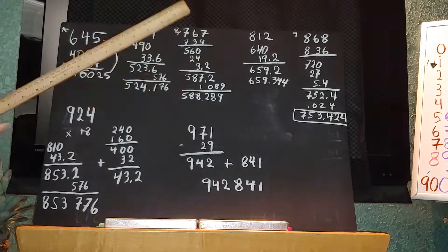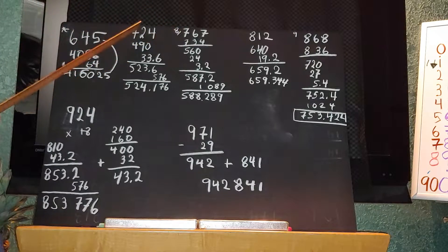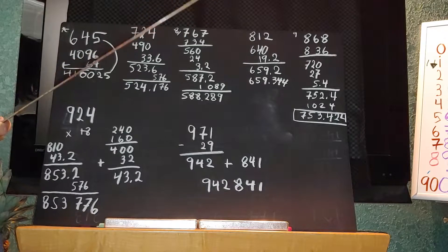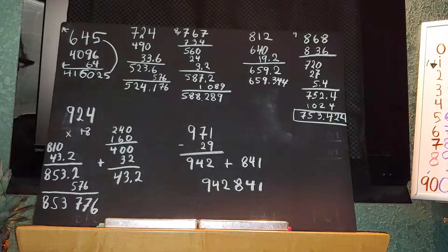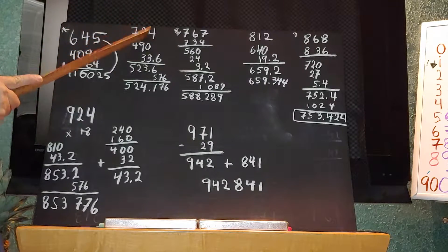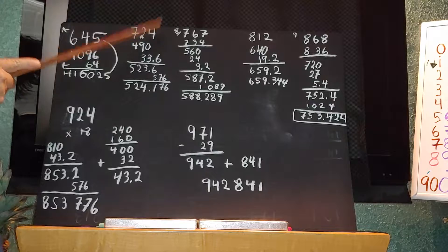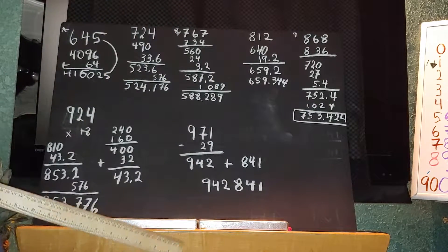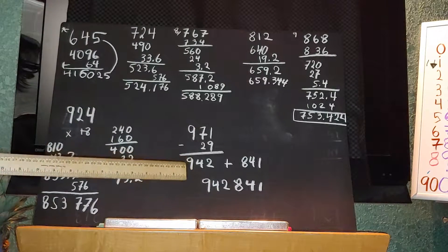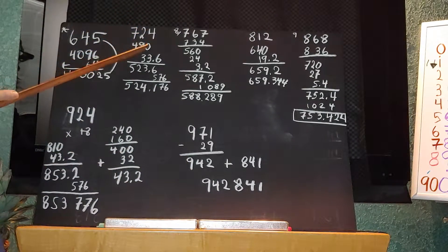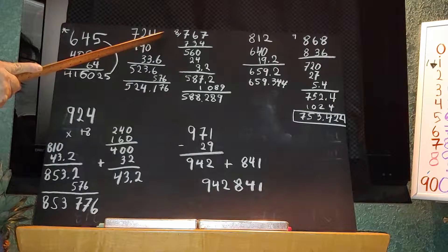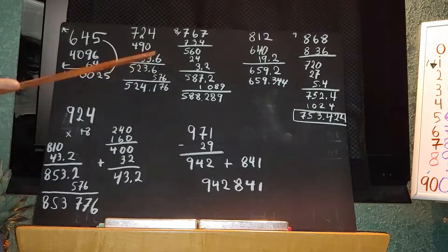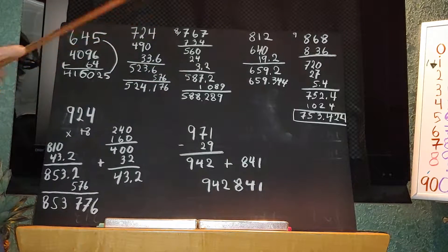For 724 squared: 700 squared is 490,000. Now we have to multiply 24 times 14 — actually, 2 times 7 — so 10 of them is 240, and 4 of them is 4 times 24 which is 96. 240 and 96 is 336, I call that 33.6. So 490 plus 33.6 gives me 523.6. Then I add on 676 — 24 squared is 576 — giving 524,176.